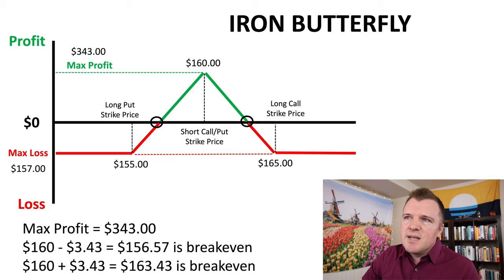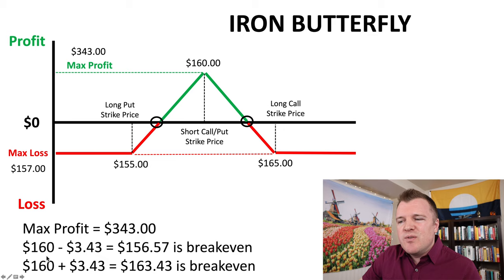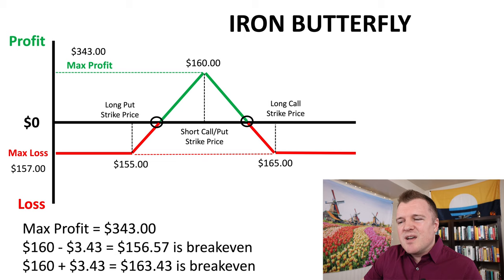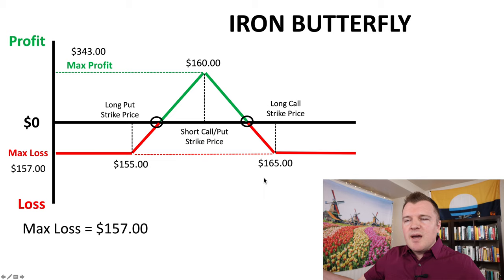Let's go back to the profit and loss diagram with our real-world JPM numbers. The short strike for both the short call and short put is 160; the long call is 165 and the long put is 155 — $5 on either side. Max profit is $343, max loss is $157. To calculate break-evens, take the net credit of $3.43 and add or subtract it from the short strike: 160 + 3.43 = $163.43 and 160 − 3.43 = $156.57. As long as JPM finishes between $156.57 and $163.43 by expiration, the trade is profitable.